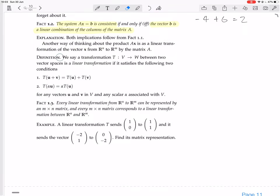So here, the definition: we say a transformation T from V to W between two vector spaces is a linear transformation if it satisfies the following two conditions. So transformation, what's that? Transformation is just another word for function or map. So this T is a map, a function from V to W.